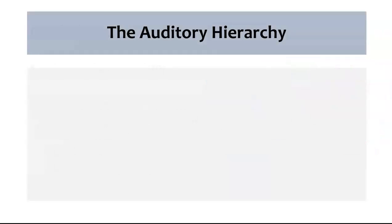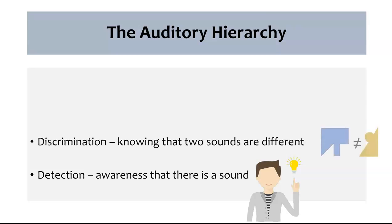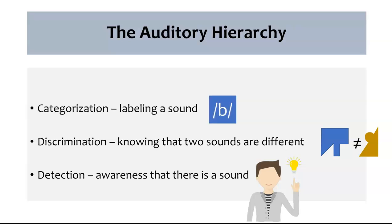We'll start with the auditory hierarchy. At the bottom is just detection of a sound — you're aware that there's a sound there, but this doesn't necessarily mean that you know it's different from any other sound, or what the sound is. Right above that is discrimination, meaning that if you hear two sounds, you know that they're different. You might not have a label for them, but you can tell they're different. Above that is when you actually have a label for that sound — if you hear a 'b' sound and know it's a 'b', that's categorizing or identifying it.